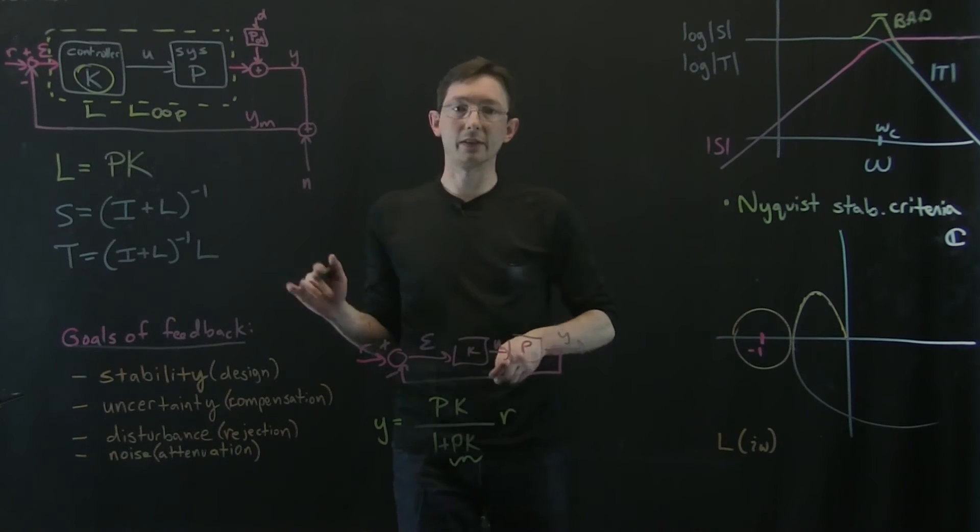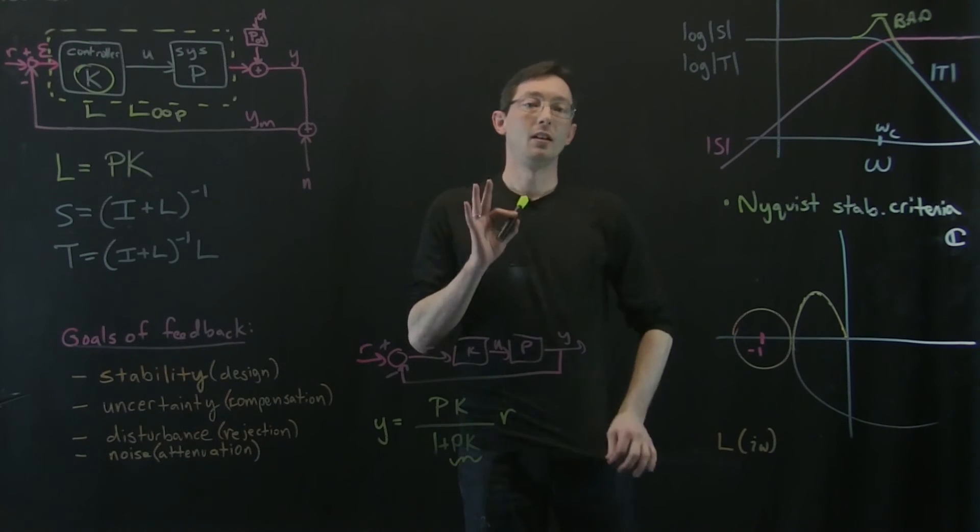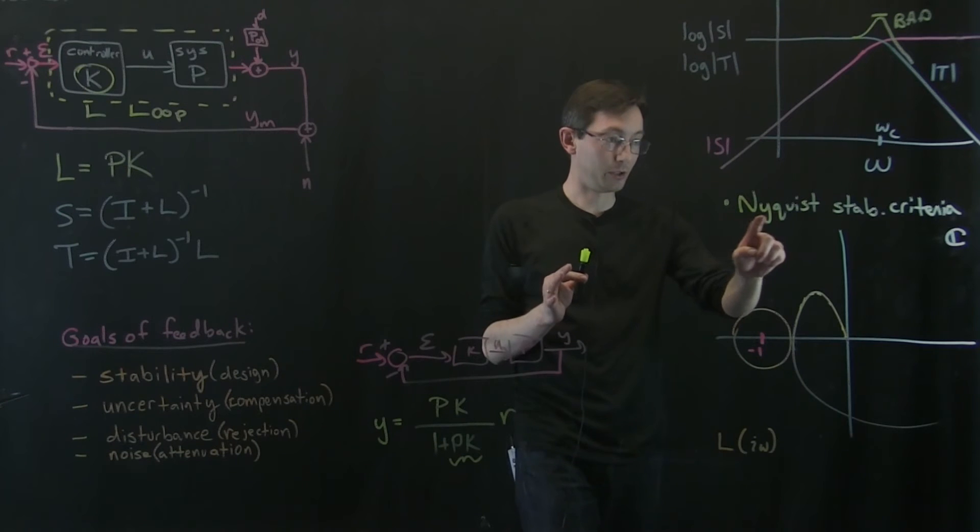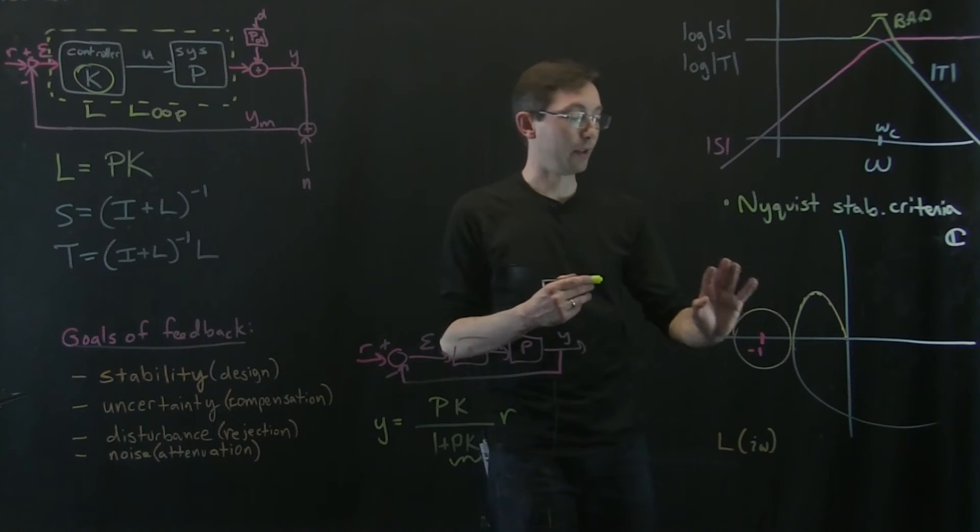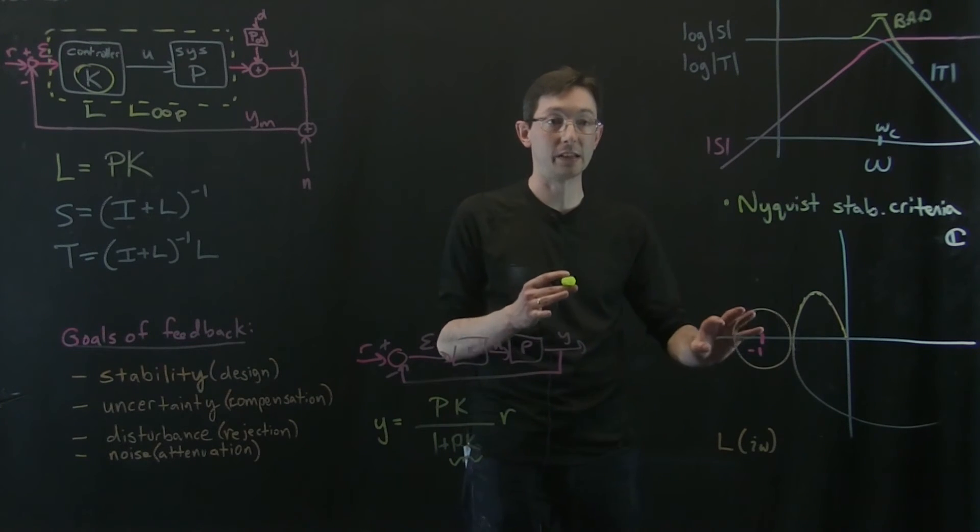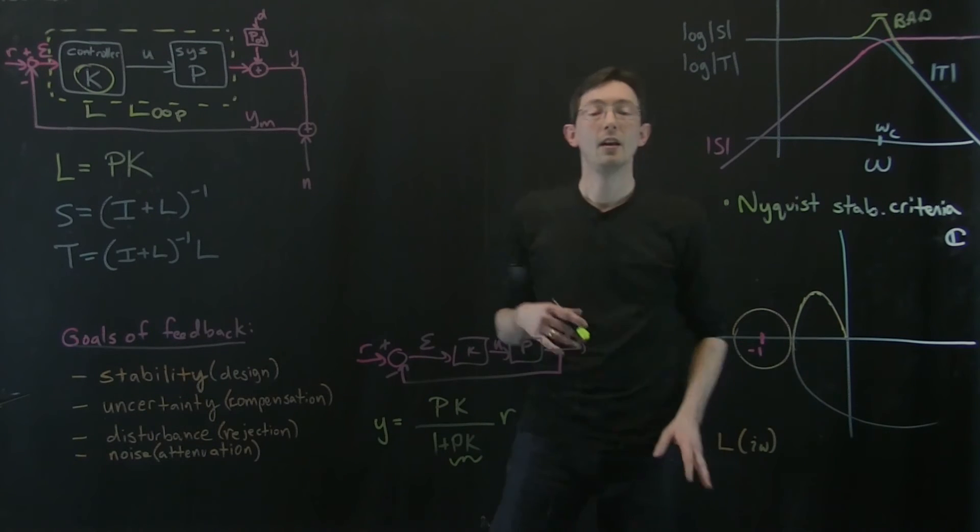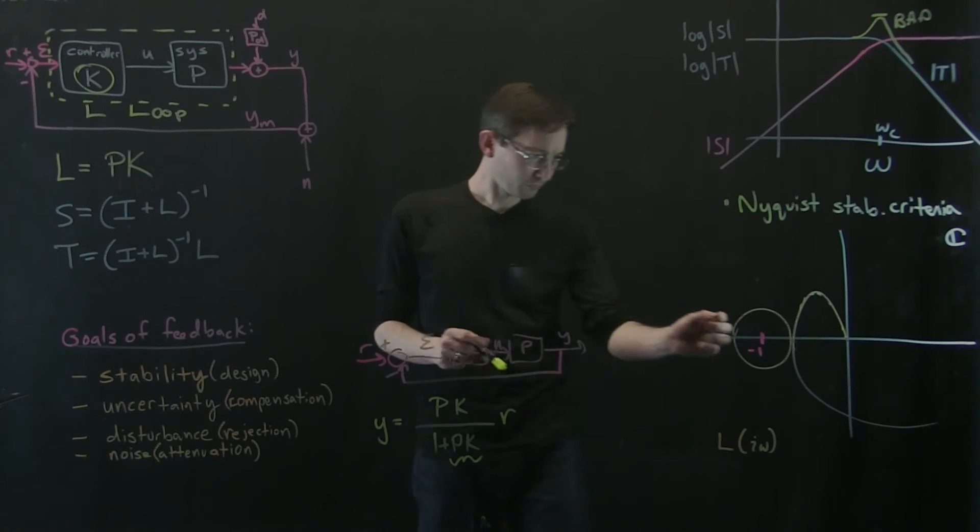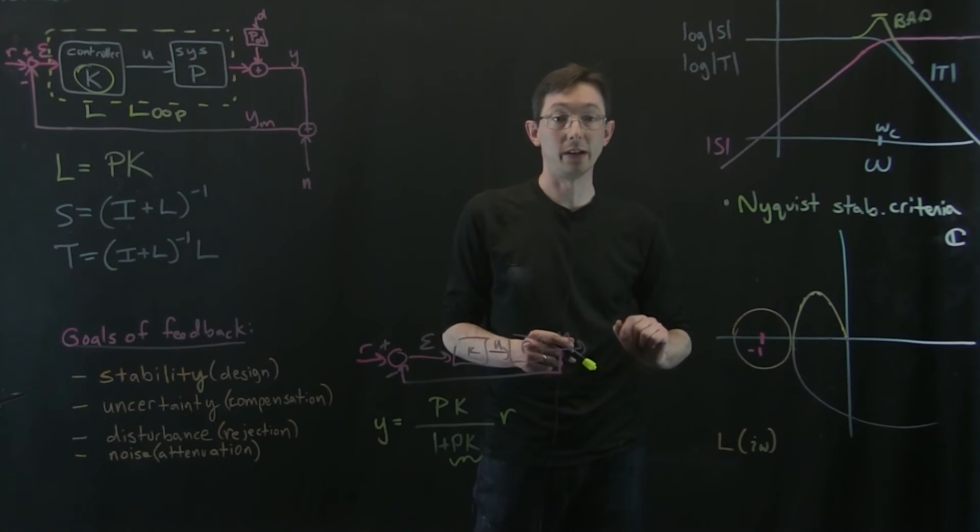Now, I'm glossing over a ton of stuff. I'm not stating this terribly precisely. If you want to know exactly the mathematical formulation, you should read about the Nyquist stability criteria. And there's deep theory about how this robustness actually is formulated in terms of this radius for my loop transfer function.